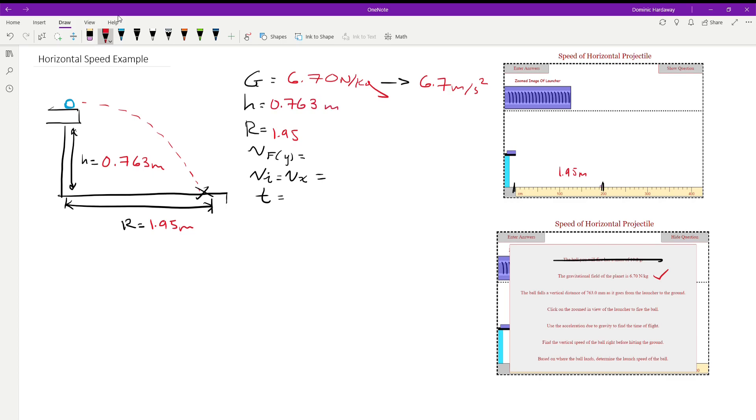And what we want to find is the time that it takes for the ball to fly this distance. We're going to find the vertical speed of the ball right before hitting the ground, which is velocity final in the y. And we're going to find the initial velocity of the ball as it comes out of the launcher here.